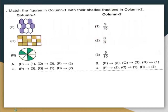Next question: match the figures in column 1 and their shaded fractions in column 2. For figure P, there are 10 hexagons, of which 5 are shaded. So the fraction is 5 out of 10. This matches with option 3.